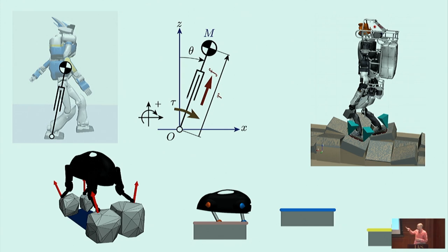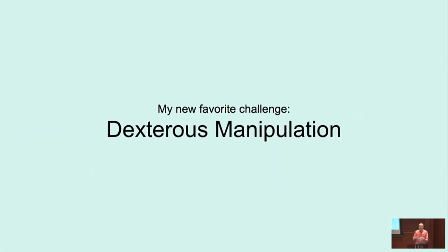We had a control system that balanced the Atlas humanoid robot. We tried applying it to a NASA humanoid robot, and about three hours later it was walking around using that full control system — very satisfying when those things work. But my new favorite challenge, the new direction in RL and control for me, is dexterous manipulation. The reason it's my new favorite challenge is that it completely breaks my tools from control, for the most part.